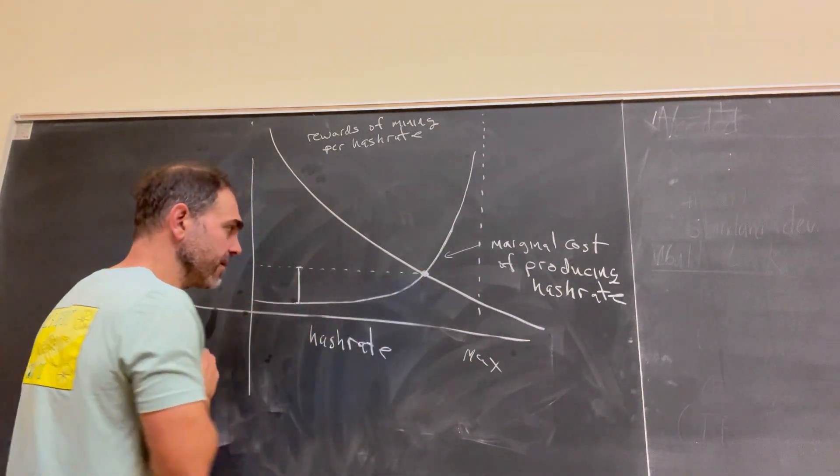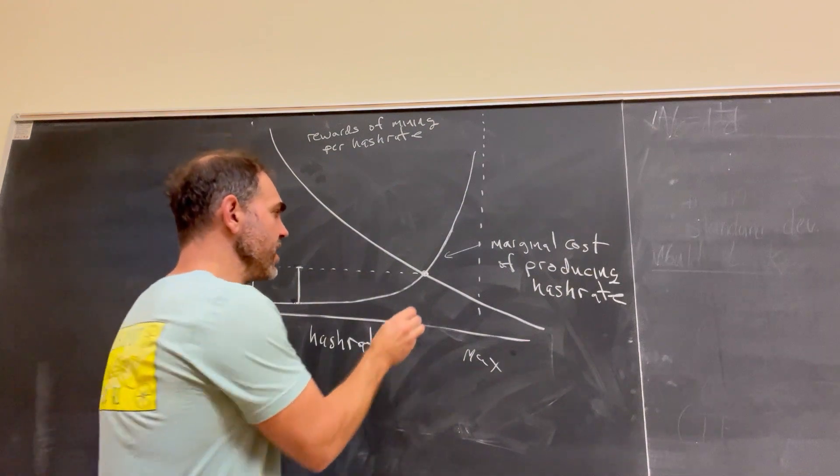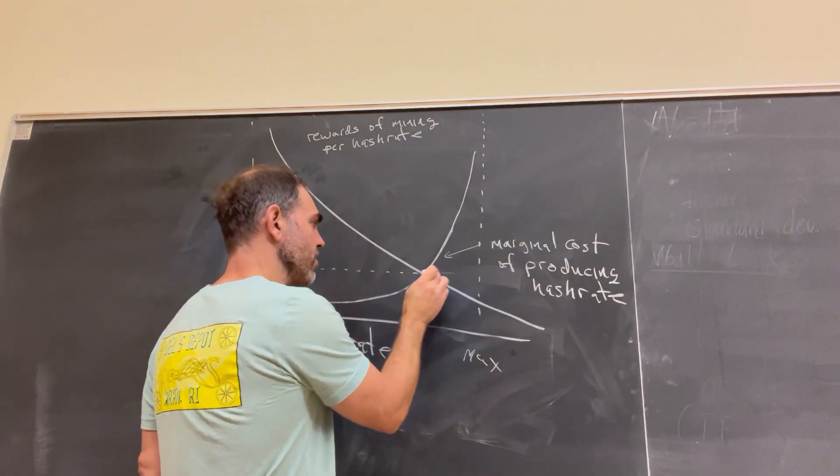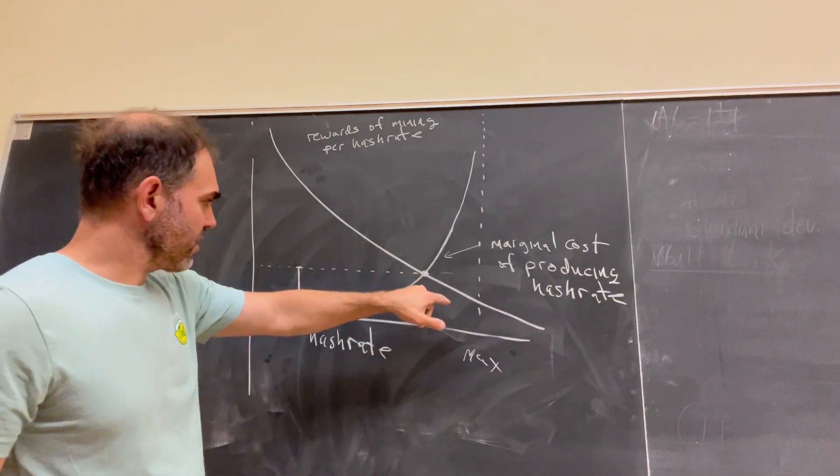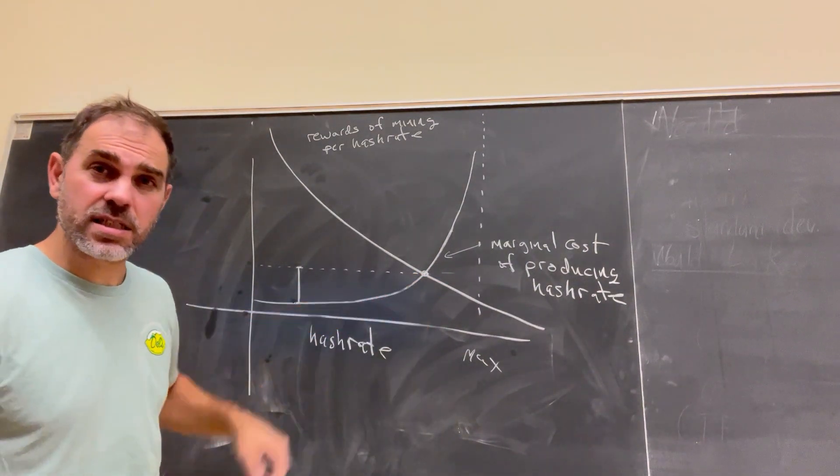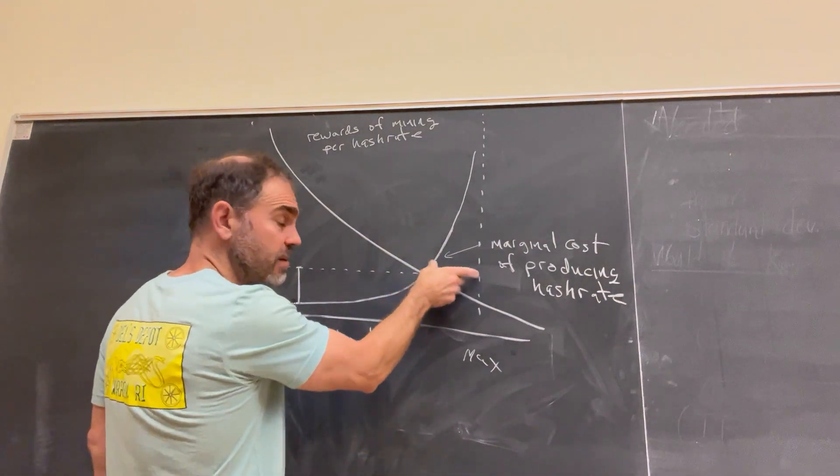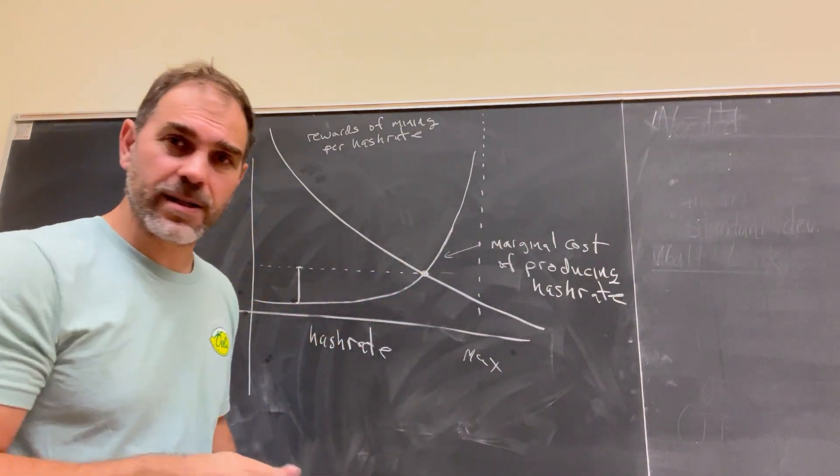These miners, this miner is indifferent. Everybody who's past this, people with old ASICs, people with expensive electricity, people with 386s, they're going to be over here. They're going to be not mining typically, right?